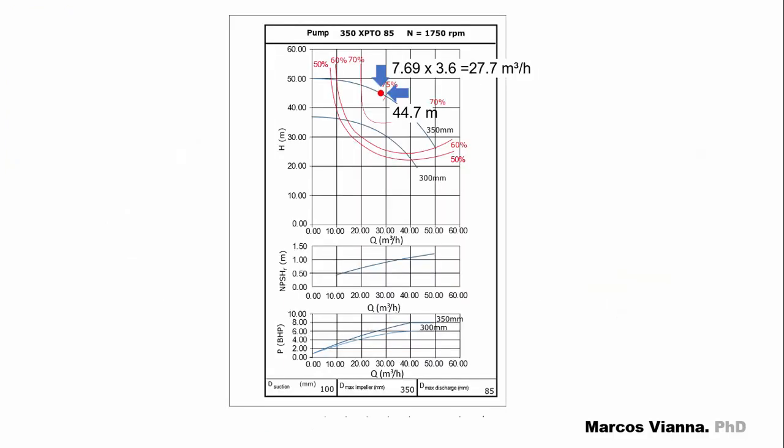If we mark the operating point in the pump chart, we'll find the corresponding values for the BHP and the required NPSH.